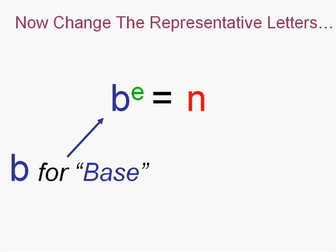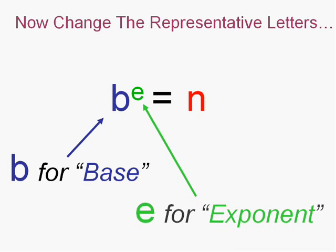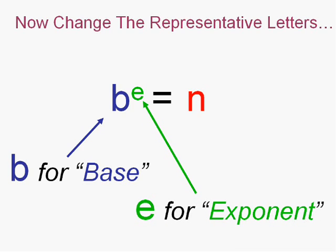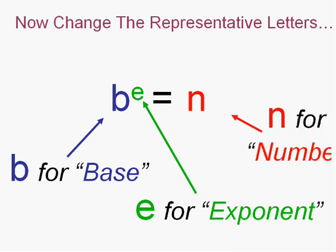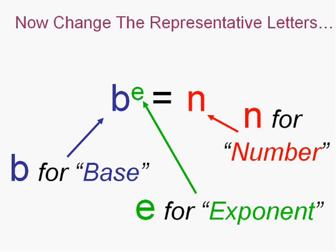I'm going to say b is the base, which we had before, e is the exponent, that seems logical, and n is just a number. Let's speak in plain English.